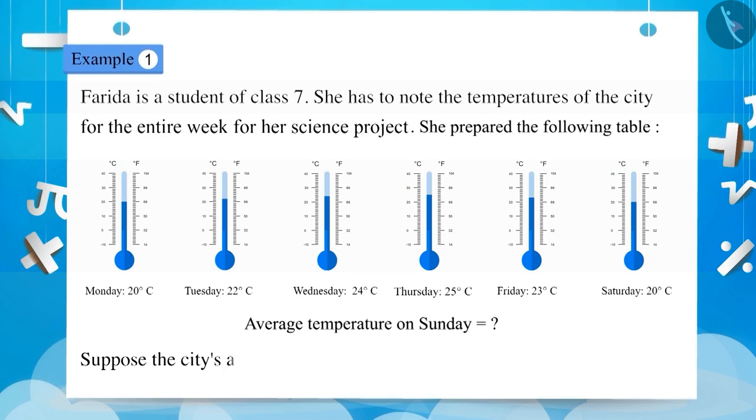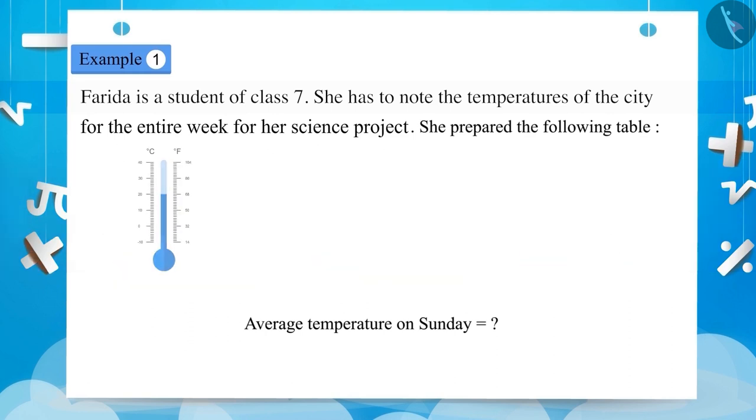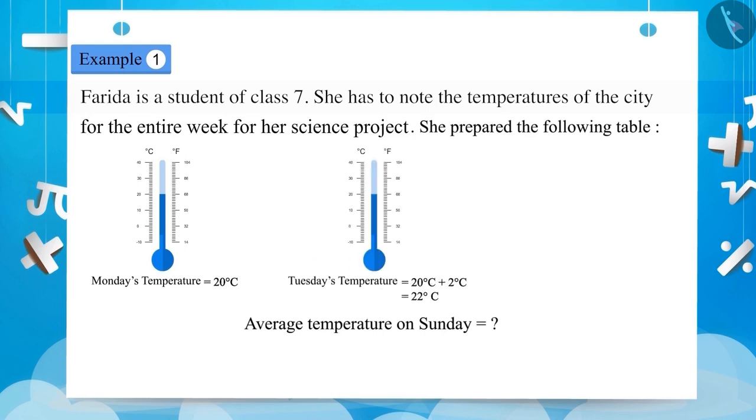Suppose that the city's average temperature is 20 degrees Celsius. If you look at the entire table carefully, you can see that the average temperature is changing constantly. Temperature on Monday is 20 degrees Celsius. On Tuesday, it is 20 degrees Celsius plus 2 degrees Celsius which is 22 degrees Celsius. On Wednesday, it is 20 degrees Celsius plus 4 degrees Celsius which is 24 degrees Celsius. As we have seen, the temperature can be more than 20 degrees Celsius.